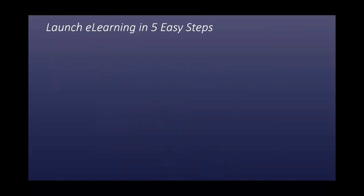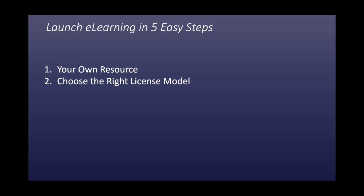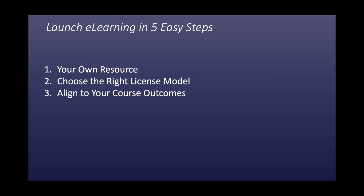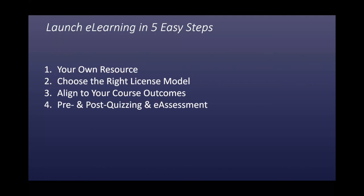So launching e-learning in five easy steps — a quick review. Number one, we are your resource. Our team will work directly with your team to implement the e-learning, so don't feel as though you're on an island — feel as though you have a partner that is a member of your team. Number two, choose the right license model. We have options from one learner for two months to hundreds, if not thousands of learners for an entire 12 months. Number three, align to your course outcomes — take your course outcomes and align the e-learning, not the other way around. Number four, pre- and post-quizzing and assessment, which becomes really important as we're testing a student's competence before or after they take the course. And finally, number five, LMS training — we will train you thoroughly on the learning management system so that you and your team understand it completely.